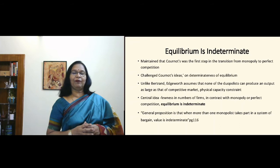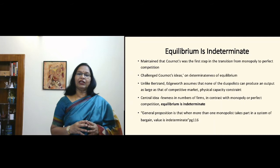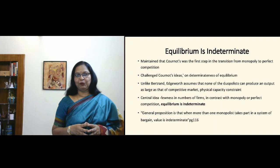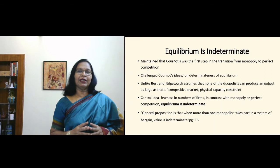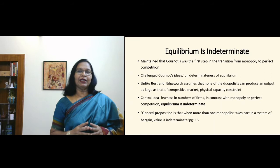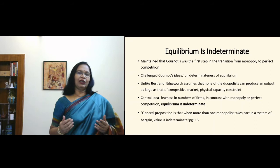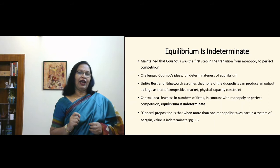Edgeworth then challenged Cournot's model on the determinateness of equilibrium, questioning whether firms really will reach stable equilibrium. Unlike Bertrand's model, Edgeworth assumed that none of the duopolists can expand its production as much as it wants because there are physical constraints that firms experience. The central idea of Edgeworth is that when the number of firms contrasts with monopoly or perfect market, equilibrium is indeterminate. His general proposition: when more than one monopolist takes part in a system of bargain, value is indeterminate.